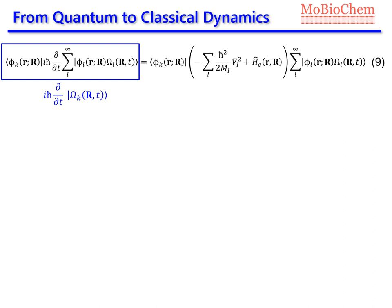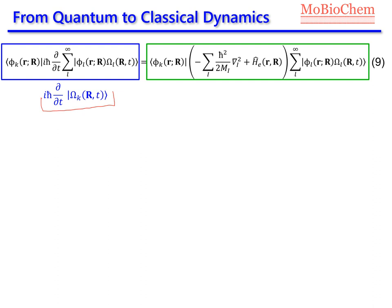Coming back to the general equation 9 — remember, equation 9 is the time-dependent Schrödinger equation — the left-hand term simplifies to only this term: i multiplied by h-bar and then the time derivative of the nuclear wave function in state k.